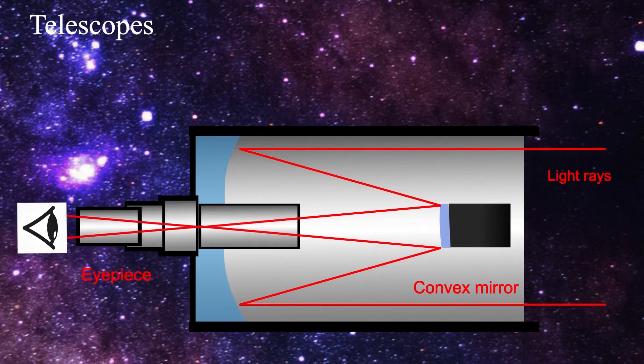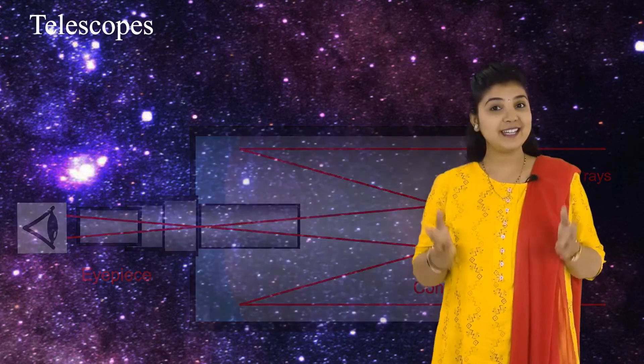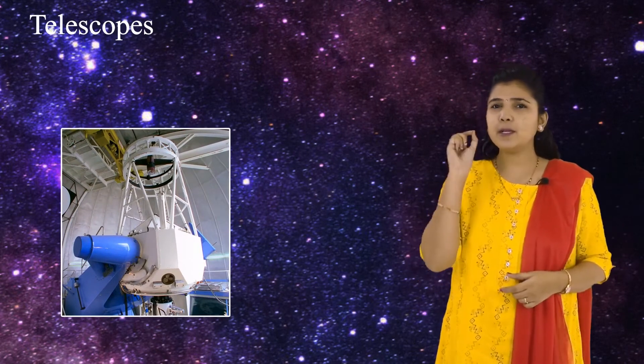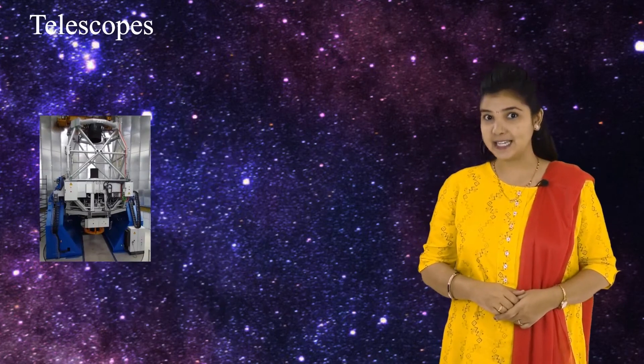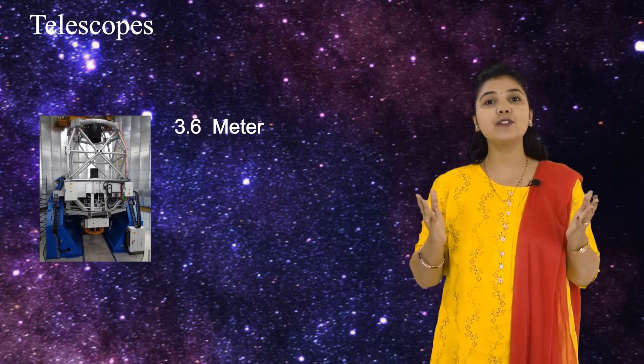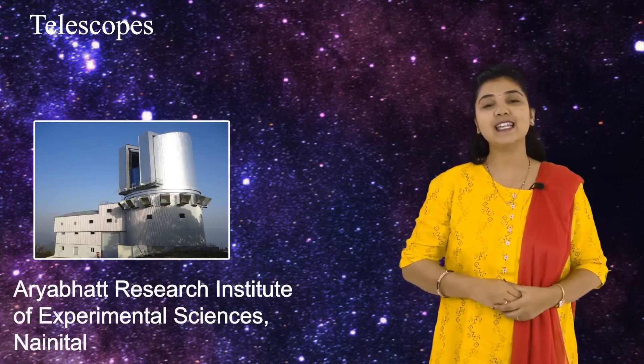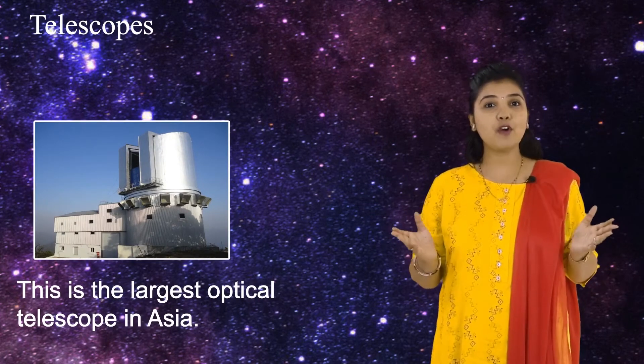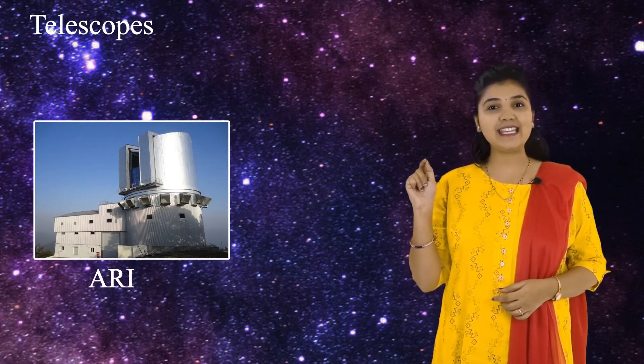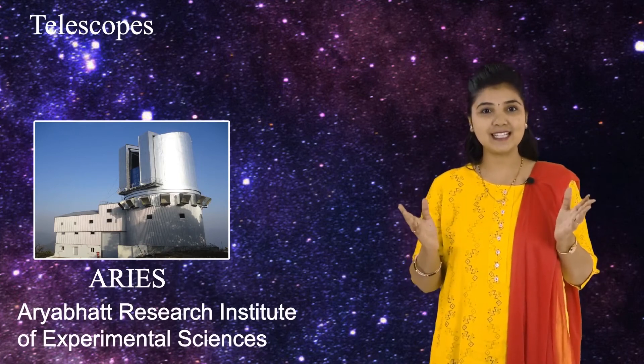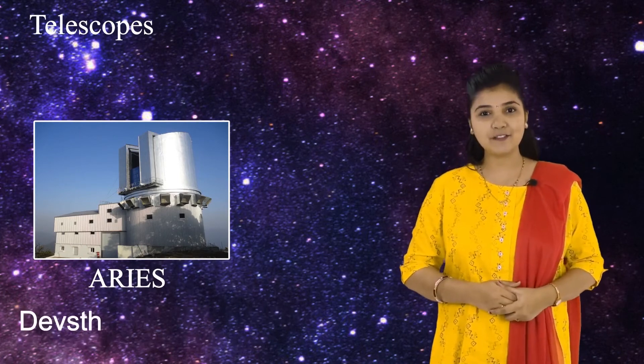In India, we have several telescopes with concave mirrors of 2 meter in diameter that have been in use for many years. The biggest optical telescope in India having a mirror of 3.6 meter diameter is situated in the Aryabhat Research Institute of Experimental Sciences, Nainital. This is the largest optical telescope in Asia. The short form of this institute is ARIES, that means Aryabhat Research Institute of Experimental Sciences and it is also called the Devasthal Telescope.